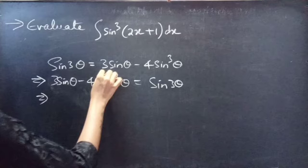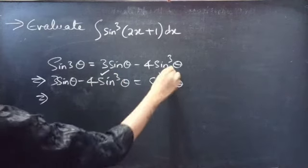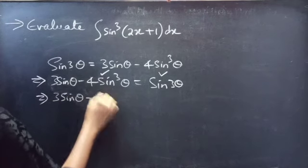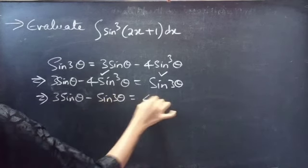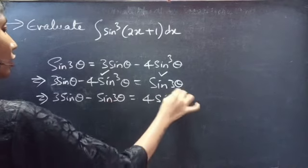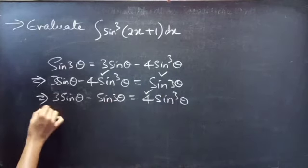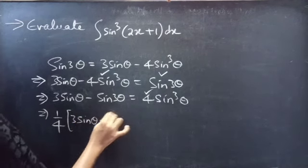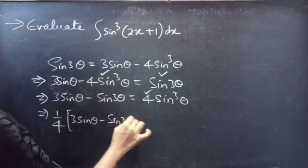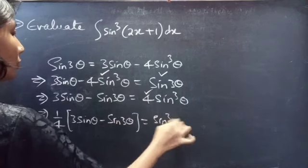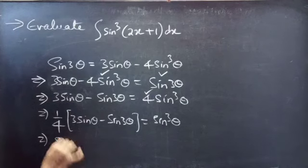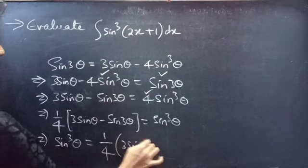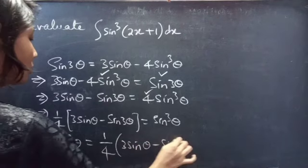Now, take the sin 3θ term to the RHS and bring the other term to the LHS. We get 3 sin θ minus sin 3θ equals 4 sin³θ. Bringing the 4 to the LHS, we get sin³θ equals 1/4 times (3 sin θ minus sin 3θ).